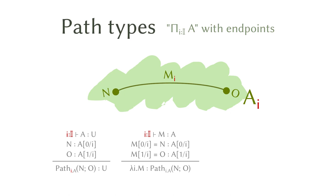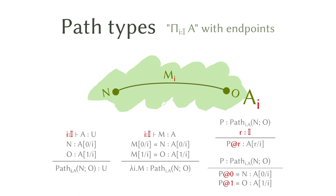The next thing is about how to use a path. If you have an element in the standard interval, you can do application — except it's the application for path types. So P applied at R will give you an element of type A with I substituted by R, which is the path at R location. There are two additional rules saying the endpoints match up: if you have a path from N to O, the zero endpoint is N and the one endpoint is O. So what you see on screen is an abbreviation of three rules for the elimination rule.